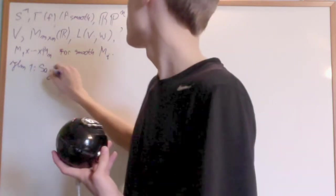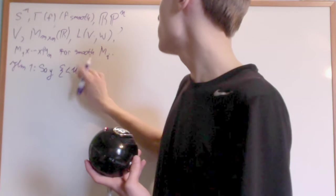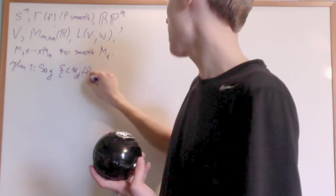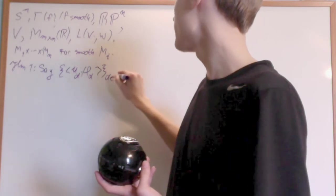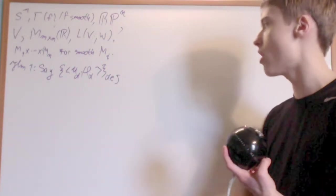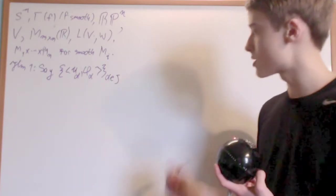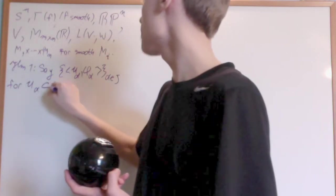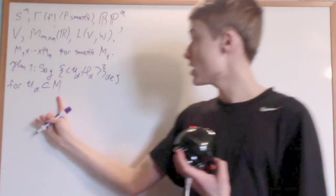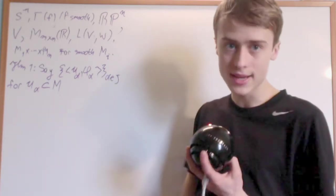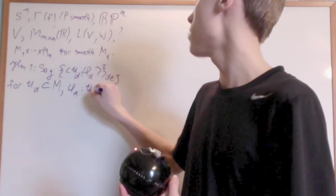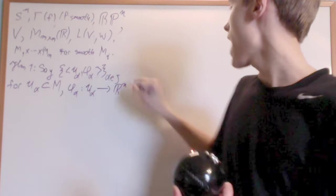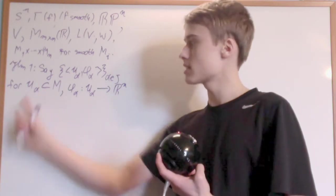So say we have the set of U_alpha and phi_alpha for alpha in J. This is just a collection of sets and maps. And let me say this for U_alpha, a subset of M. M right here doesn't have a topology, so there's no notion of openness. So this is just a subset. And phi_alpha here is going to be a map from U_alpha down to R^N. This acts as my chart maps and this acts as my open set.